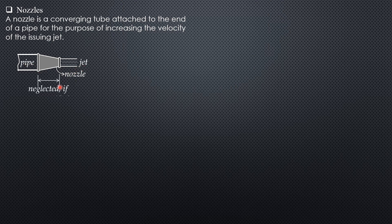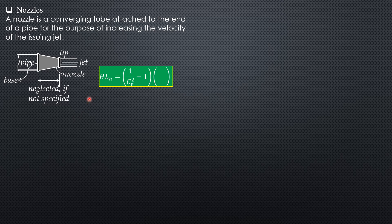The parts of a nozzle include the pipe, the nozzle itself, and the jet. The distance between the base of the nozzle and the nozzle tip is neglected if not specified in the problem. The head loss in the nozzle is given by (1/Cv² − 1) times the velocity head at the nozzle tip, which is the velocity of the jet.